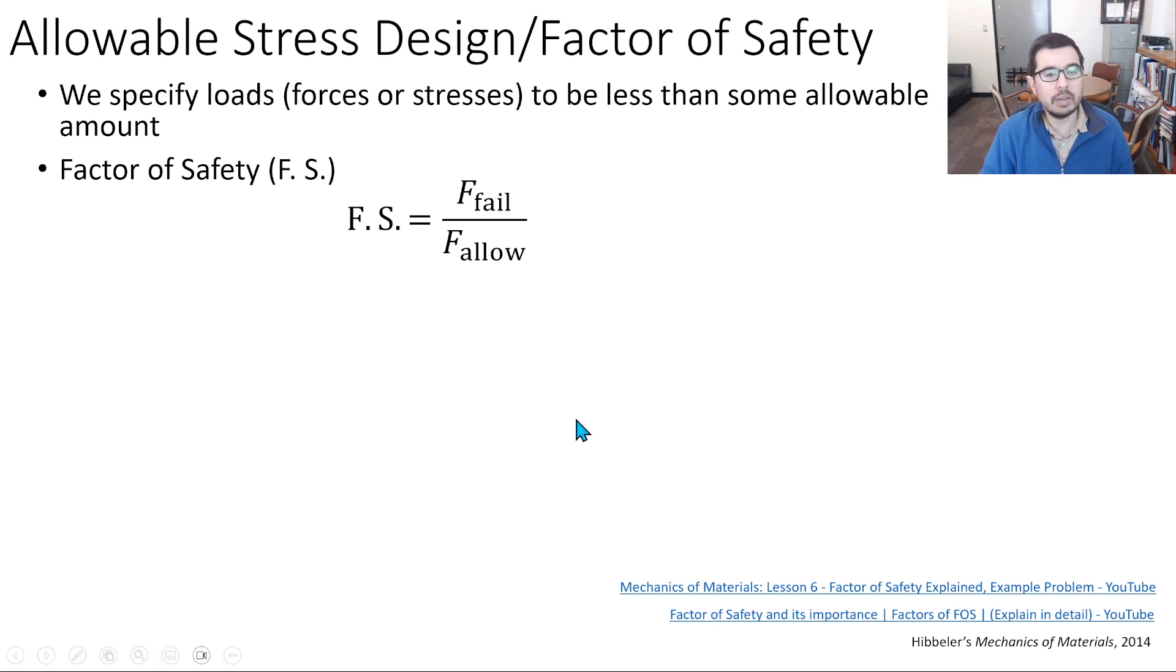One way to think about the factor of safety is what's the force that's going to be associated with failure and what are we going to allow. So we say, oh no, you can't weigh over 30 pounds for this particular car seat for a baby or toddler, but I really know that it's probably going to handle 60, and that would give me a safety factor of two, but I'm going to specify that you have to be under 30 pounds. I don't know if that's what they use, so don't quote me on that, I'm just throwing that out there.